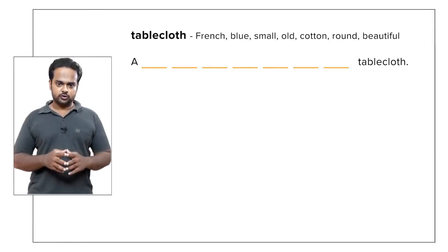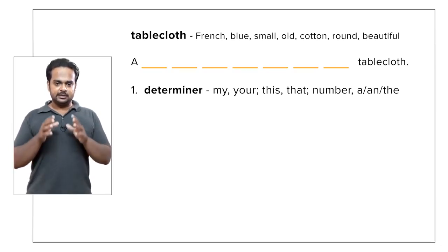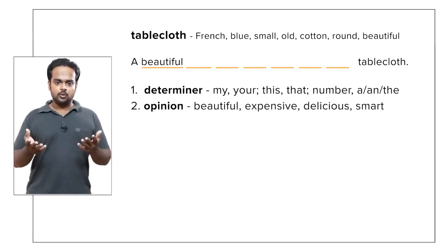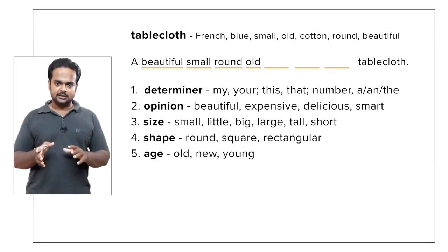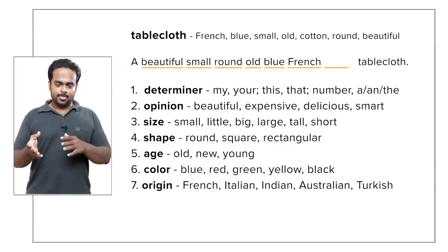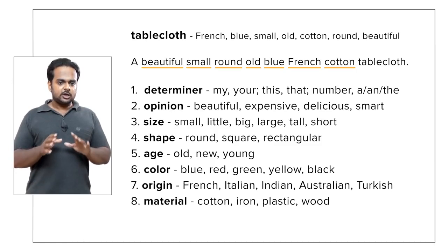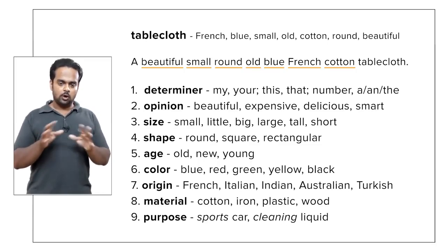Here's how you order adjectives in English. If we have a determiner, we put it first — in this sentence the determiner is 'a.' We then say our opinion — in this case, 'beautiful.' Then comes size: small. Then shape: round. After that, we put age: old. Then comes color: blue. And then origin — my tablecloth is from France, so 'French.' We can then say what material it's made of: cotton. And finally, we can include its purpose if we want. In the case of the tablecloth, we don't have a purpose, so we don't need to include it.